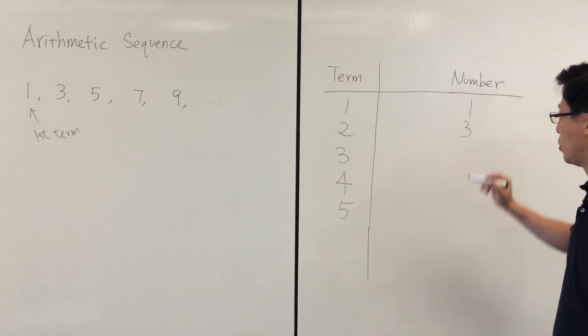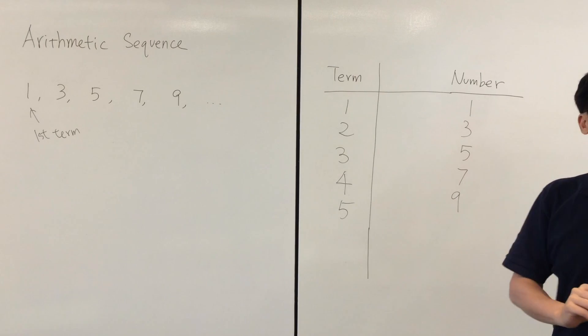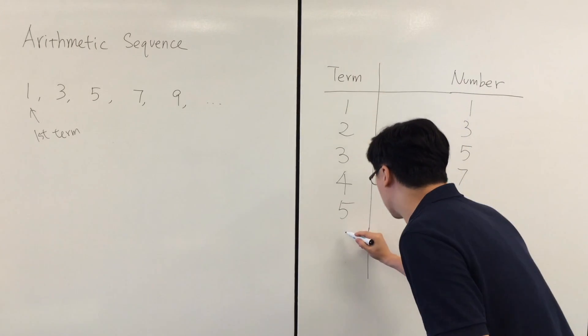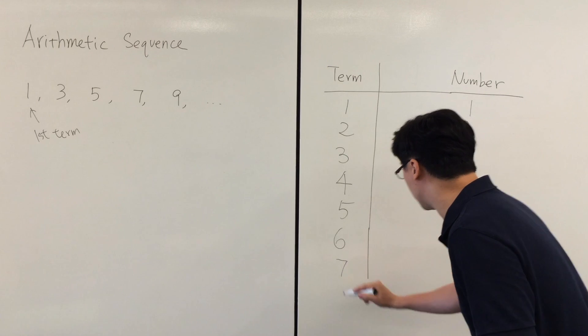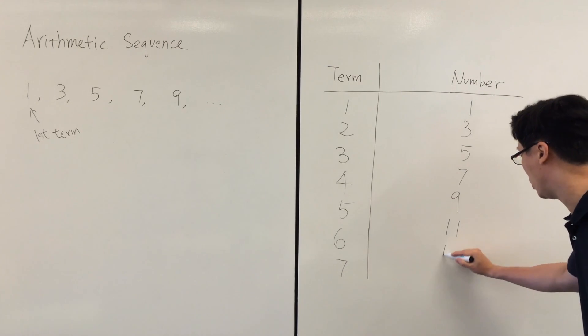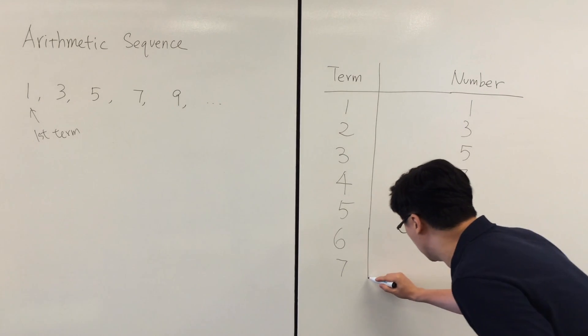The third term is 5, then 7, 9, and so on. Naturally, this is quite easy to predict the next number. So the next one will be 11, the seventh one will be 13, and so on.